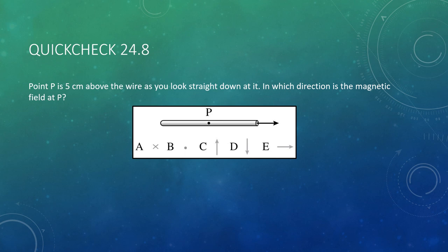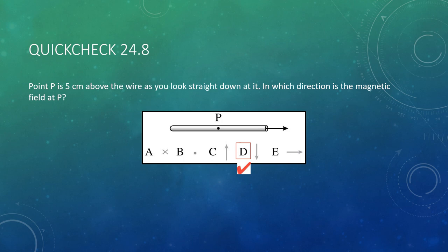Next quick check: Point P is 5 centimeters above a wire in a top-down view. The current is moving to the right. Using the right-hand rule — thumb pointing right, fingers curling around the wire — when you get above the wire, your fingers point downward. The magnetic field at point P is directed downward, answer D.